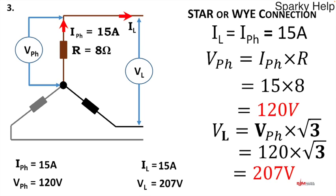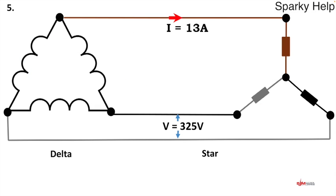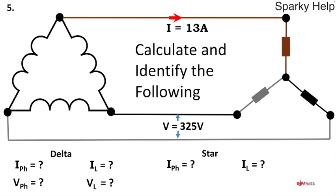Let's move on to the last question — question five. This one is a delta-to-star connection. I've given you a voltage and a current. Calculate and identify everything. Pause the video, grab a pen and calculator, and give it a go.